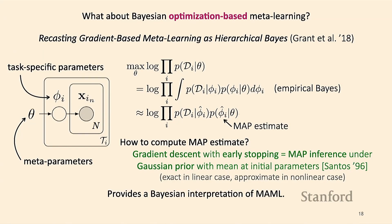This provides a Bayesian interpretation of what MAML is doing. However, the unsatisfying thing is it doesn't allow us to actually sample from the distribution over task parameters — it almost gets rid of the Bayesian part of Bayesian approaches. The next three algorithms will allow us to actually sample from this distribution rather than using a MAP estimate.